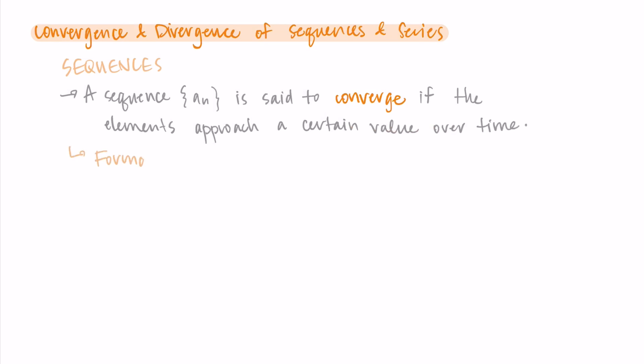Formally, we say that a sequence a sub n converges to a value L if the limit as n approaches infinity of the terms of a sub n is equal to L. This means as we look at further and further terms in the list in this sequence, eventually those terms should be reaching some value L.